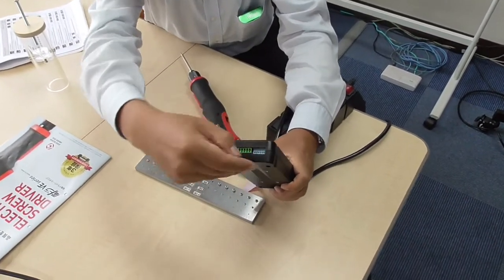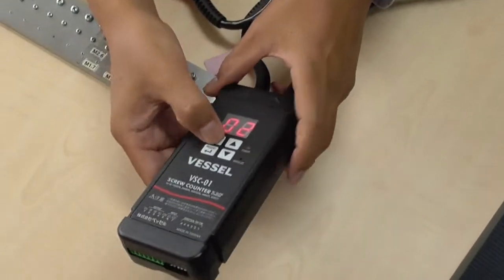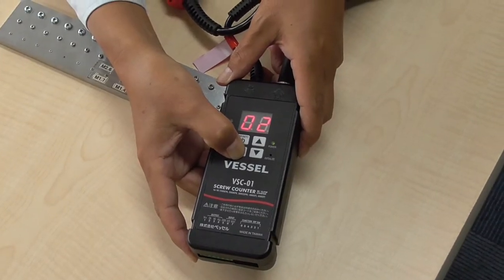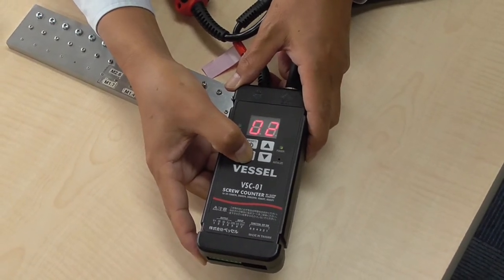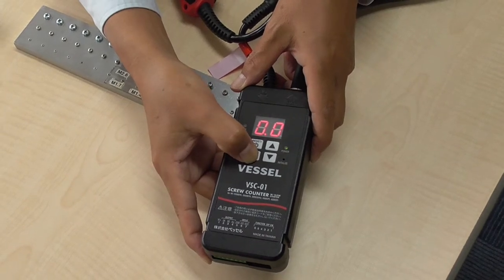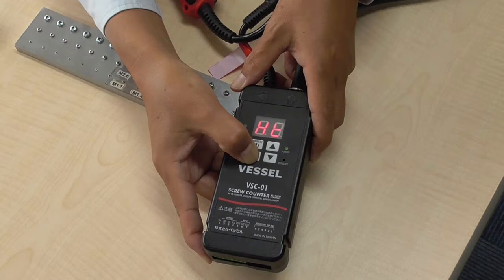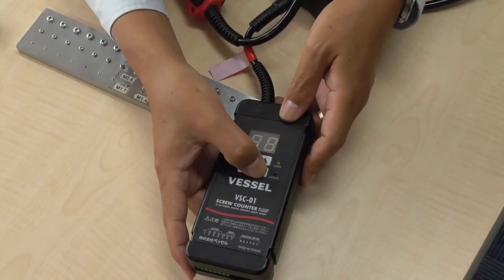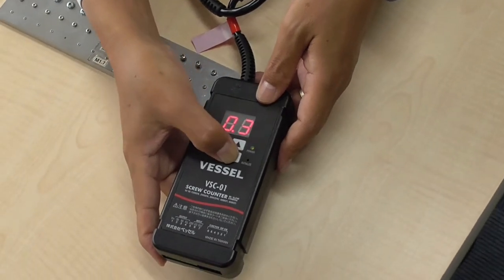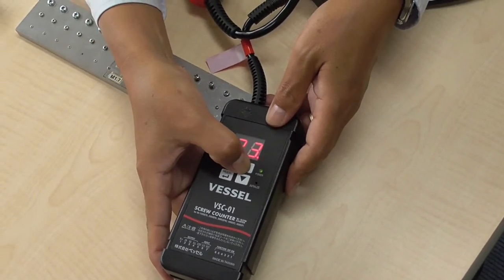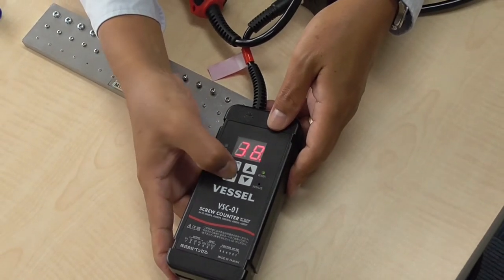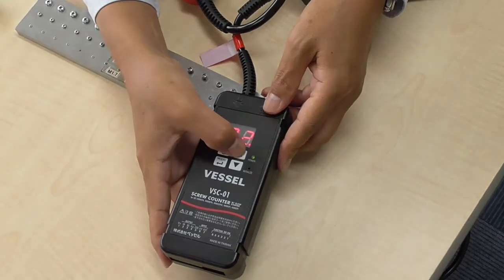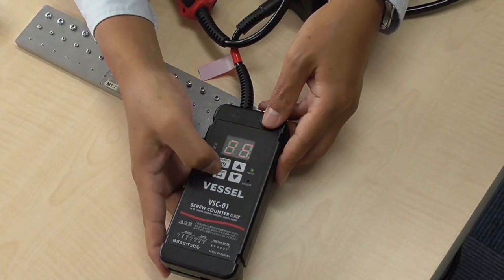Return the dip switch and hold. This is high time, so we set the high time to 0.38 and low time to 0.25. And set it.